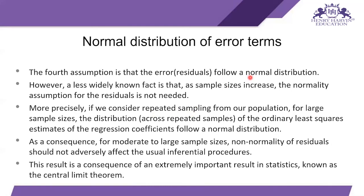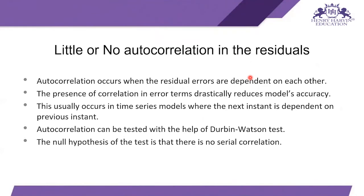The fifth assumption is little or no autocorrelation in the residuals. Autocorrelation occurs when residuals are dependent on each other. The presence of correlation in error terms drastically reduces model accuracy. This usually occurs in time series models where the next instance depends on the previous one. Autocorrelation can be tested using the Durbin-Watson test, whose null hypothesis is that there is no serial correlation.